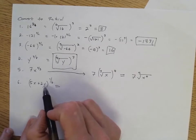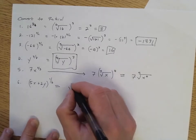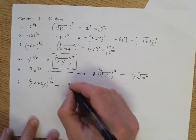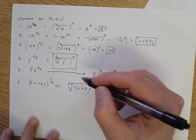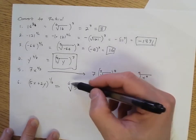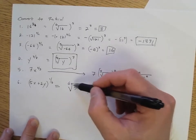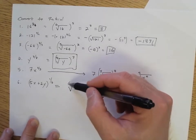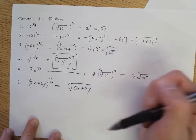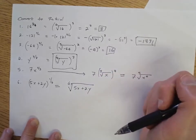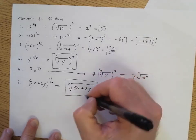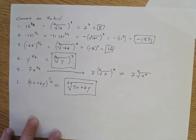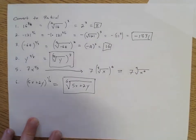Number six: we rewrite this as the sixth root of 5x plus 2y, and that's all we can do. We can't distribute the six into this expression because we have addition. So that's all we can do for number six.